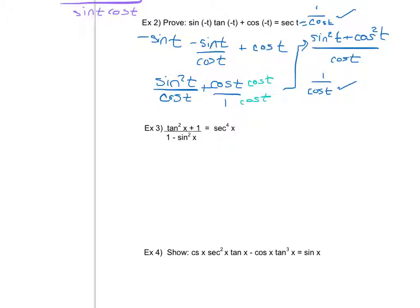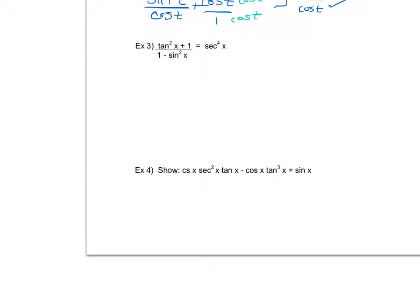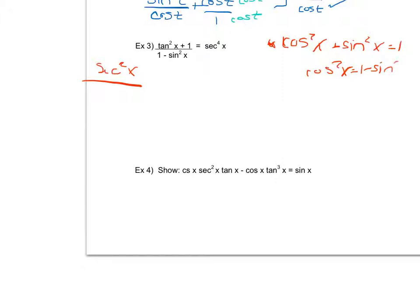Let's look at example three. Again, I'm going to work with the left side because there's more going on there, and hopefully show it's equivalent to the right side. The very first thing I notice is that the numerator is an identity — tangent squared plus one equals secant squared x, no rearrangement needed. On the bottom, I notice it's similar to an identity: since cosine squared plus sine squared equals one, I can say cosine squared x equals one minus sine squared x, and replace that denominator with cosine squared x.